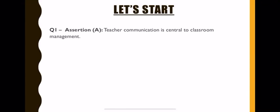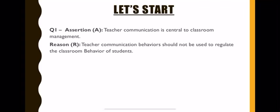Our first question is an assertion and reason based question. The assertion says teacher communication is central to classroom management, and the reason says teacher communication behavior should not be used to regulate the classroom behavior of students. Assertion means a statement and reason means an explanation about that particular statement. We need to tell if the assertion is correct according to the reason or not.